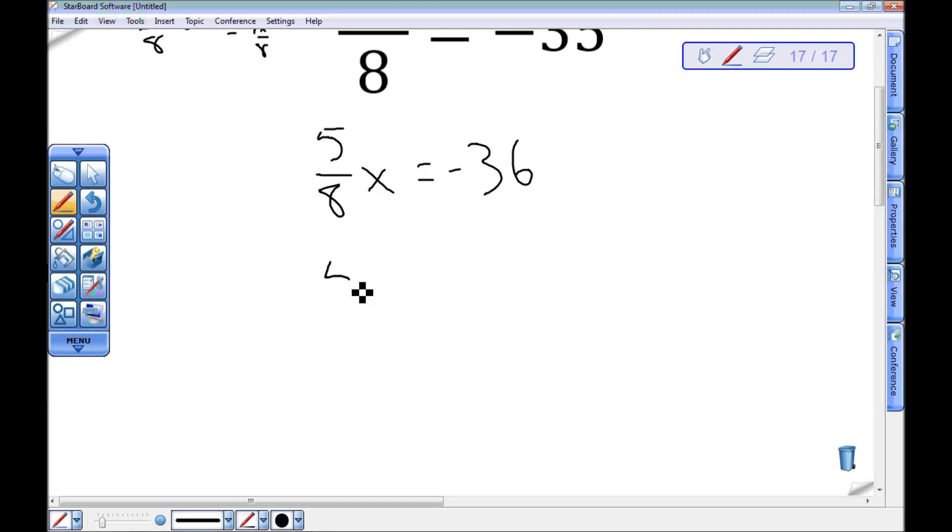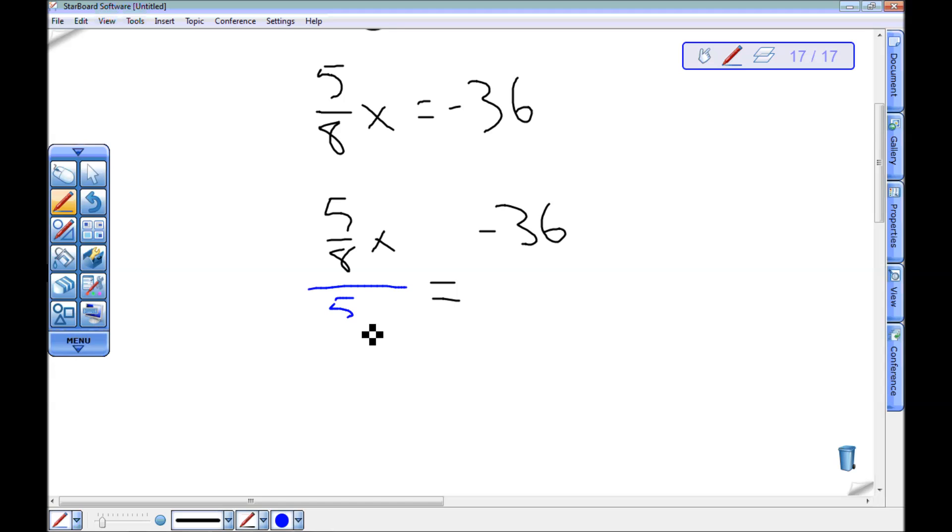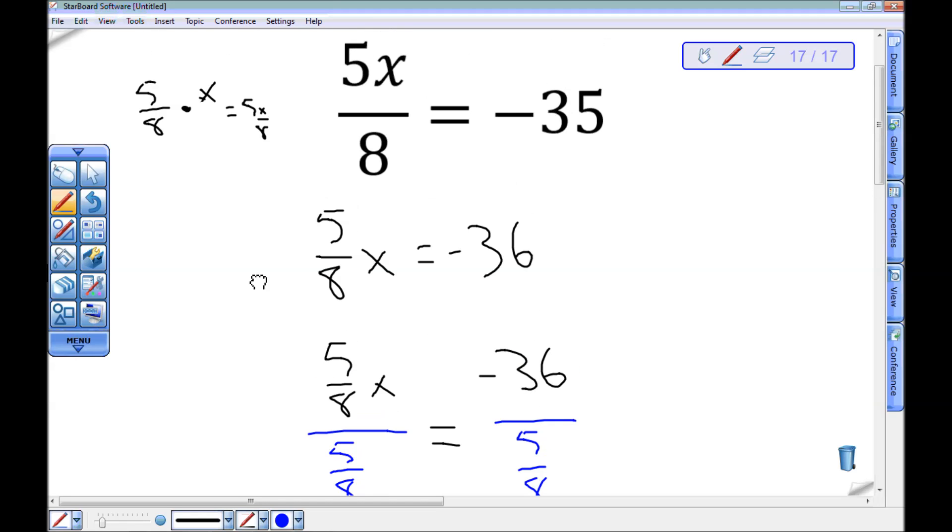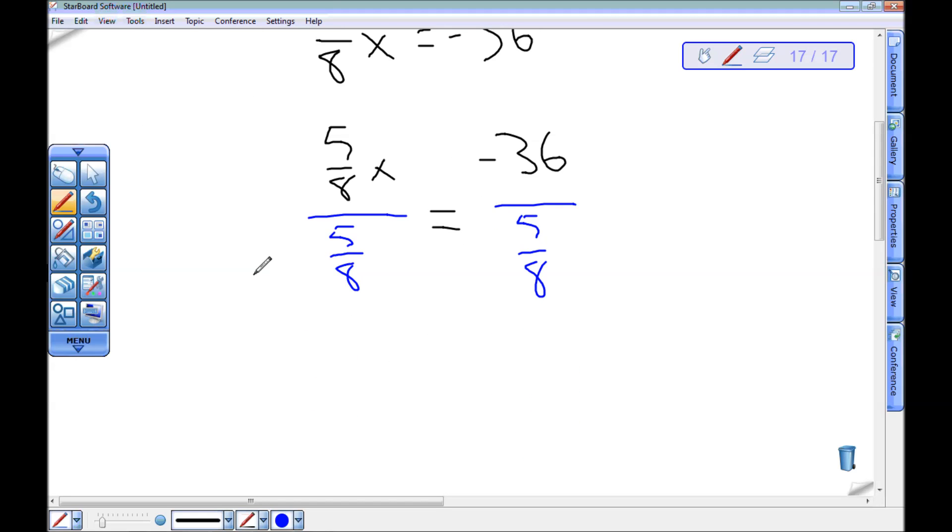So let me re-copy and do that. I can just divide by 5 eighths and divide this by 5 eighths. So this is x, 5 eighths times x divided by 5 eighths.